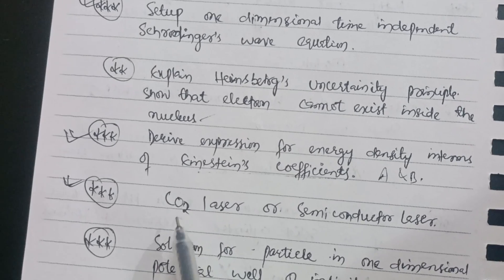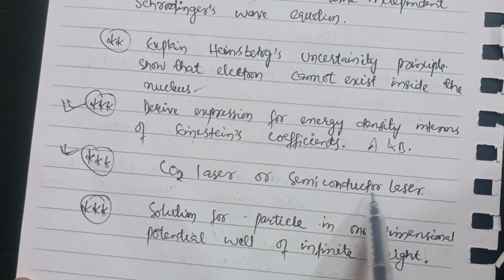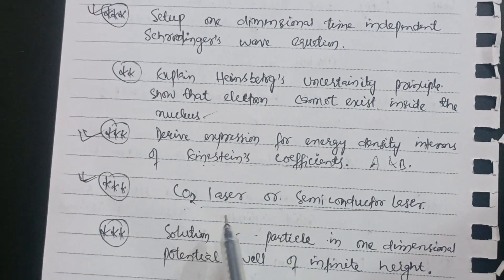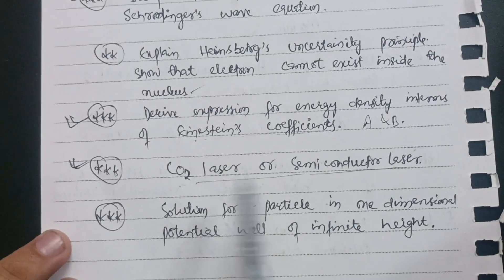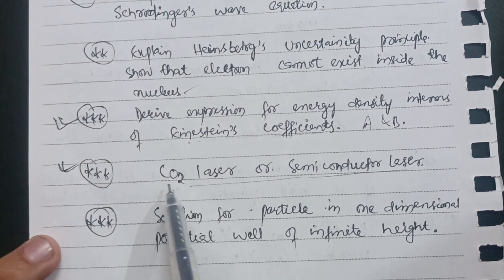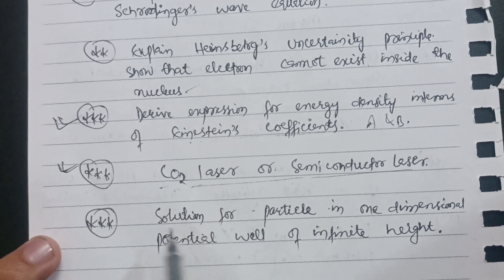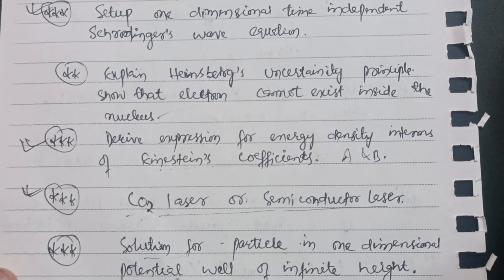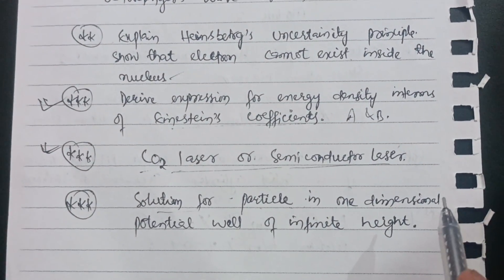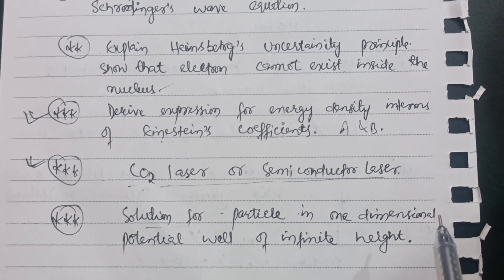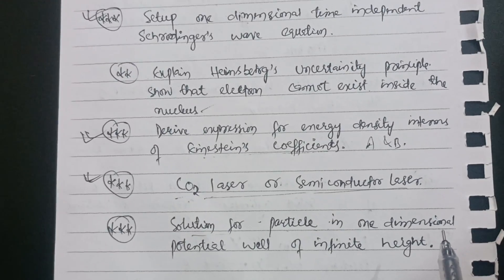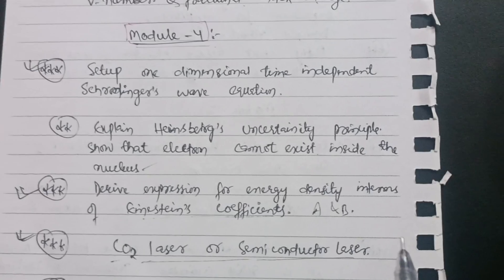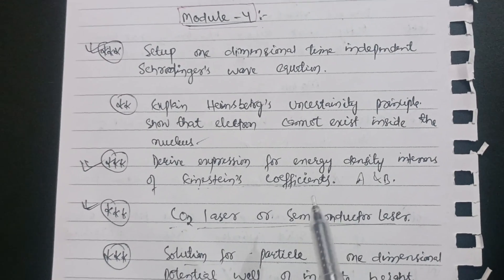There are two lasers to study in Module 4: CO₂ laser (carbon dioxide laser) and semiconductor laser. At least one will be asked — write the construction and working principle of each. Most often the CO₂ laser is asked. Also, another derivation is the solution for a particle in a one-dimensional potential well of infinite height. Cover these five topics in Module 4 and you can skip the numerical part of this module.